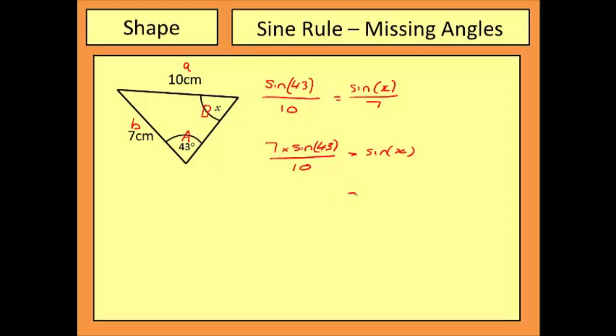Now take care here. When you do this calculation, 7 times sine 43 divided by 10, this won't give you the answer. What this will give you is the sine of your missing angle. So the actual result you'll get is 0.477 and then a few things after it. We need to do inverse sine of this value. Now what I would do here is I would use the answer function on your calculator to recall the last answer entered. So if you press inverse sine answer button, you will get the same value as me for the missing angle, which is 28.5 degrees.